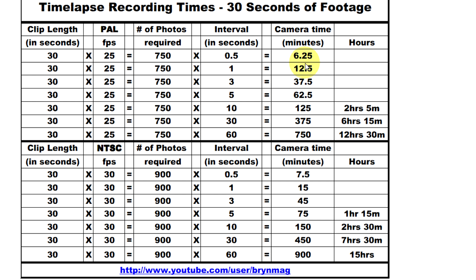It can also be seen that at 30 frames per second, the required camera time increases. If you are taking star timelapse footage, then 30 seconds of footage at an interval of 30 seconds will take PAL users 6 and a quarter hours and NTSC users 7 and a half hours. And that doesn't leave much time before the sun comes up. I will make this chart available as a download by putting the download link in the description below.